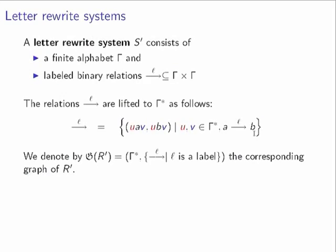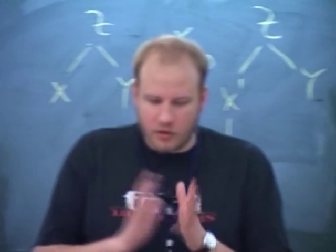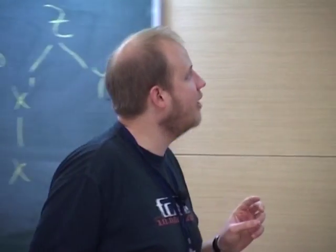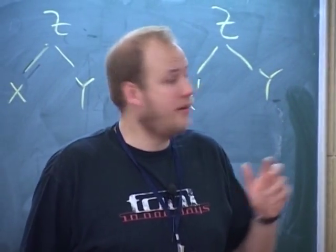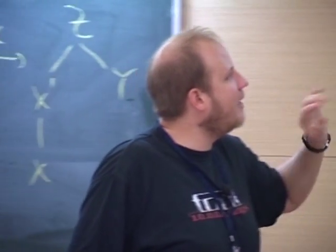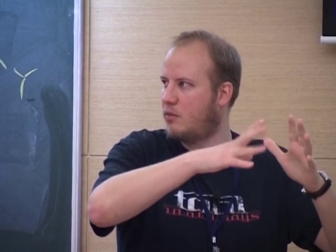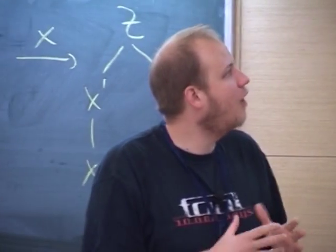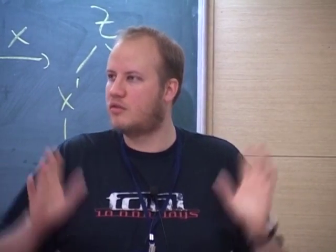The graph S' consists of all words and the given letter rewriting. The thing that our translation does: we compute a concrete letter rewrite system. The set of letters in this computed letter rewrite system consists of the set of ranked trees of exponential size. Concretely, it's the size of the ground rewrite system times 4^(quantifier rank of the formula). We compute a finite alphabet consisting of all small trees, where 'small' means exponential size.